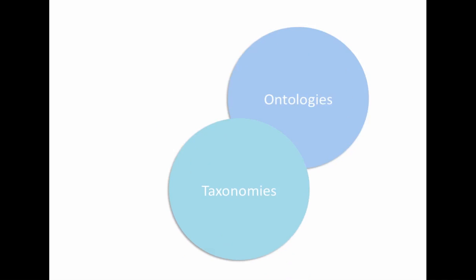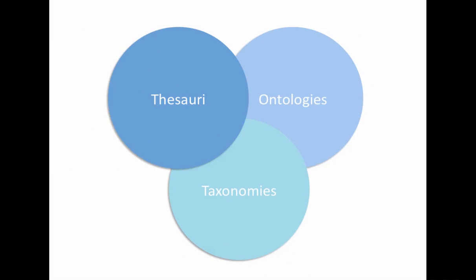Taxonomies, ontologies, and thesauri are used to build control vocabularies, which all contain terms, their synonyms, and alternative descriptions.